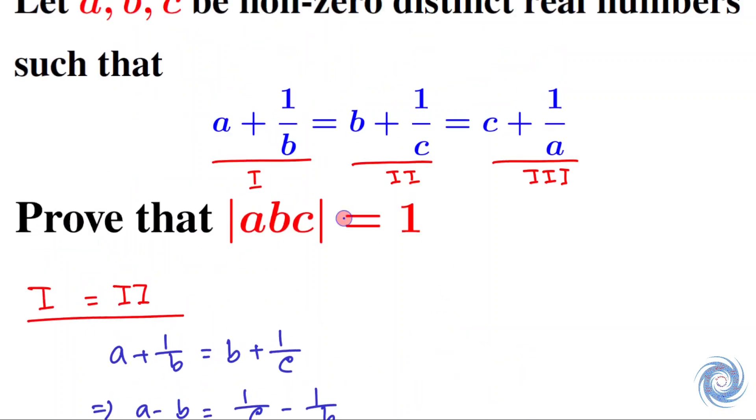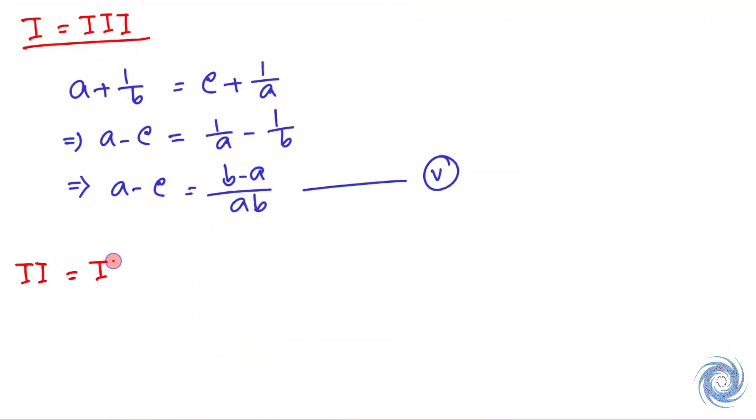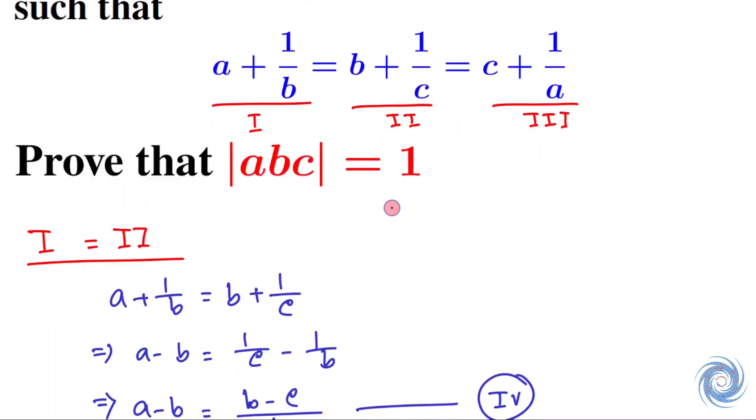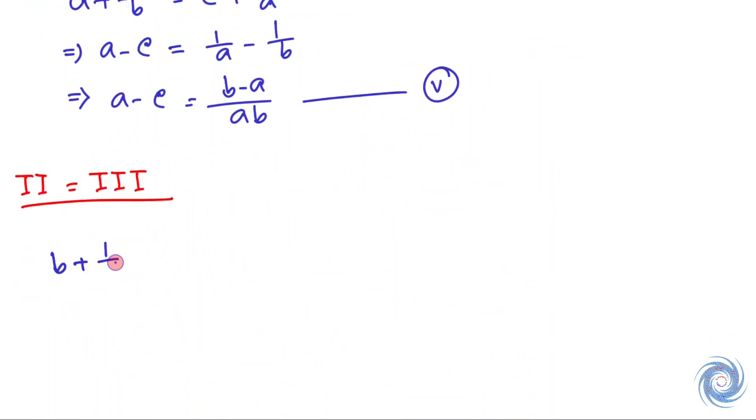Now by equating II equals III, we have b plus 1 over c equals c plus 1 over a. This implies b minus c equals 1 over a minus 1 over c, so b minus c equals c minus a over ac. Let us take this equation as Equation VI.